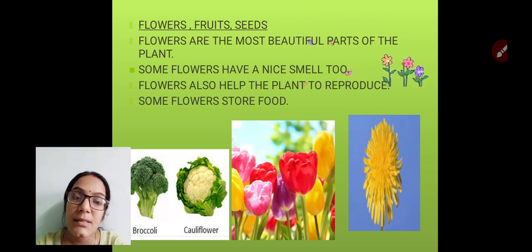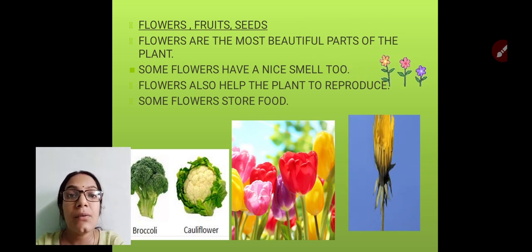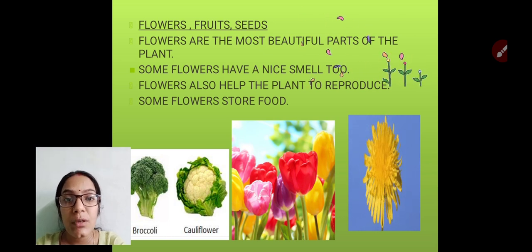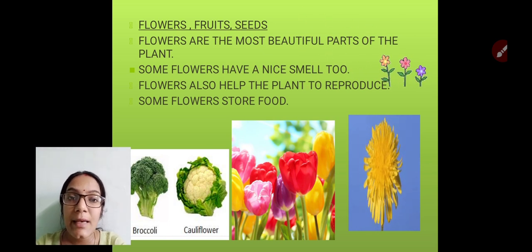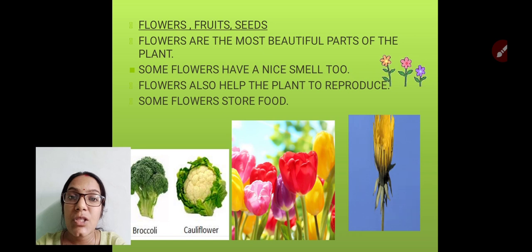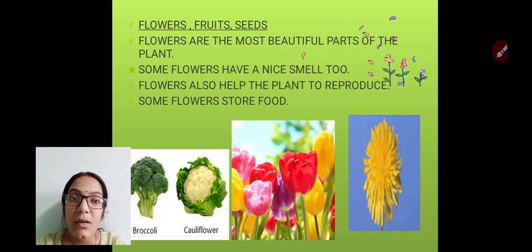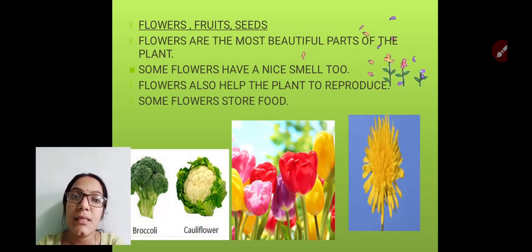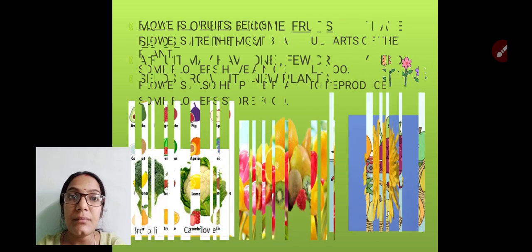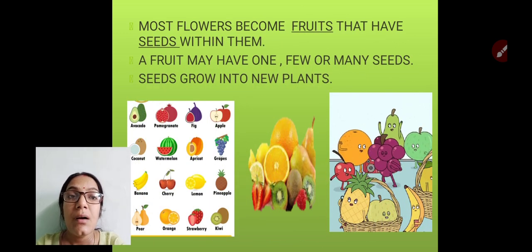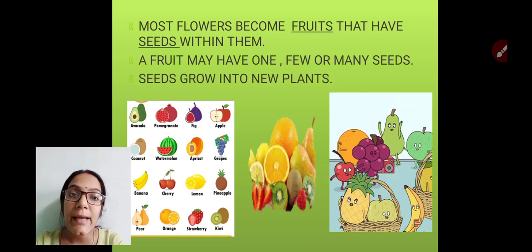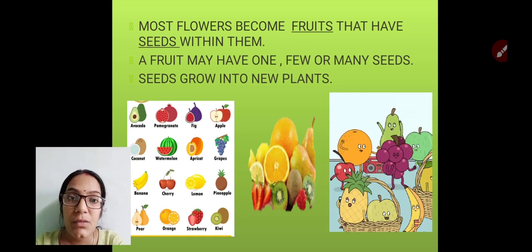Flowers also help the plant to reproduce — they help the plant to make more new plants. Some flowers also store food, just like leaves, and we eat them too. For example, broccoli and cauliflower are flowers which we eat.